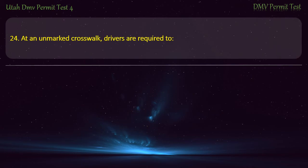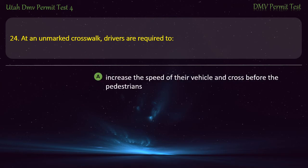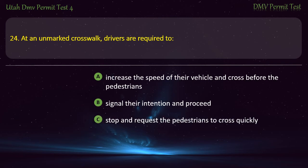Question 24. At an unmarked crosswalk, drivers are required to: Increase the speed of their vehicle and cross before the pedestrians; Signal their intention and proceed; Stop and request the pedestrians to cross quickly; or Yield the right of way to the pedestrians? Answer: Yield the right of way to the pedestrians.